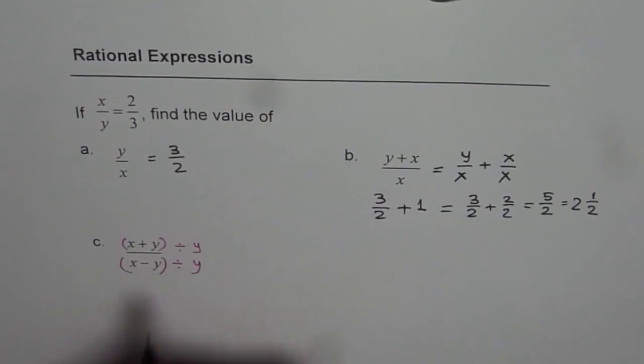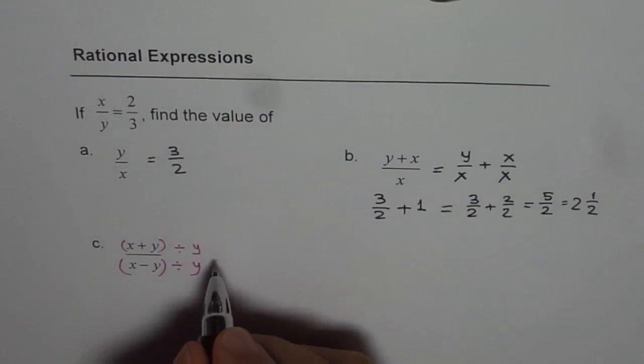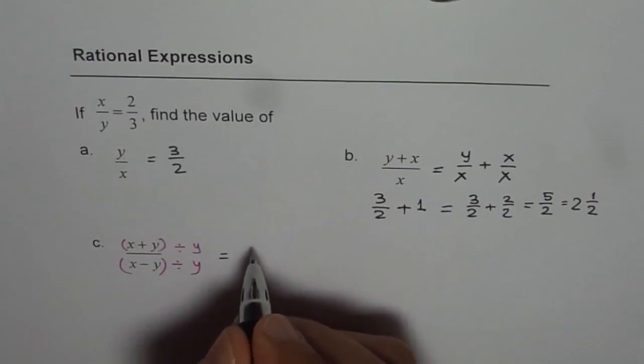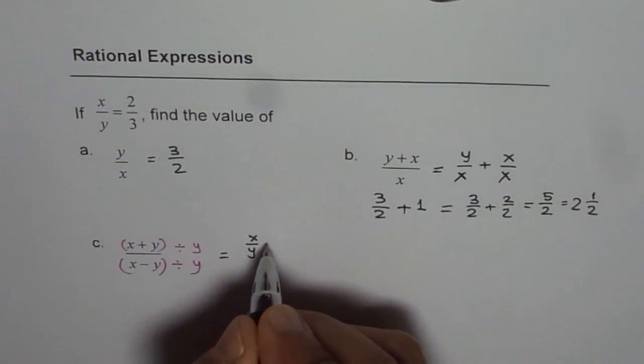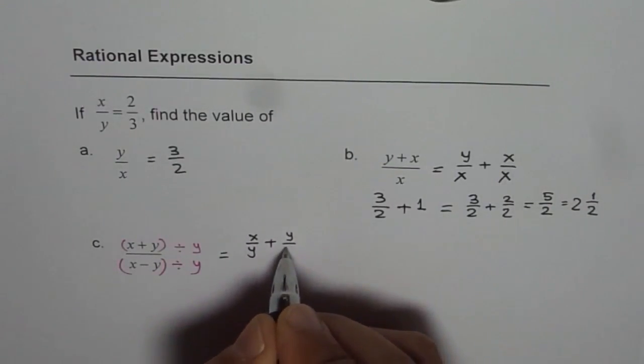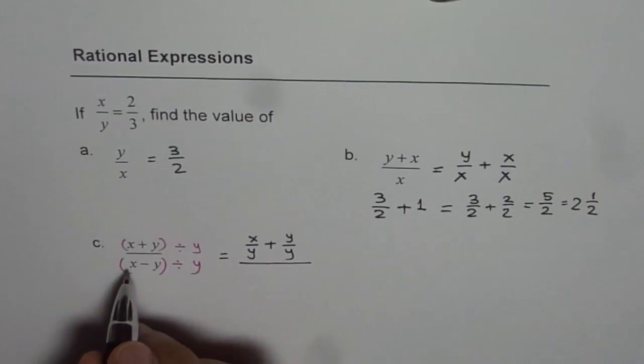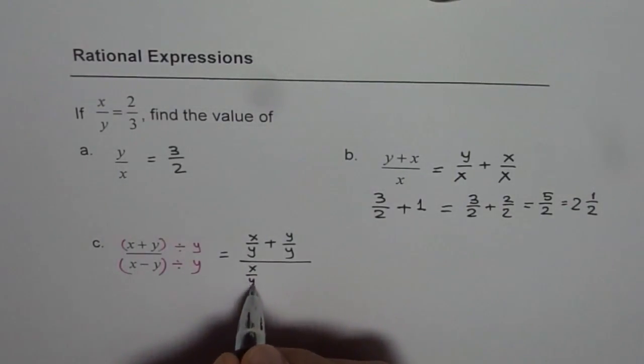So we are dividing both numerator and denominator by y. If I do that, I get x over y plus y over y, divided by x over y minus y over y.